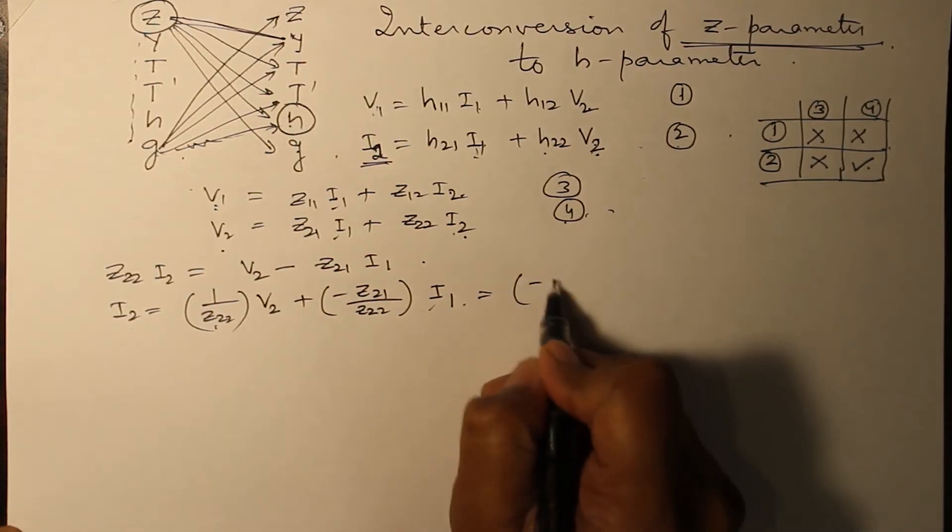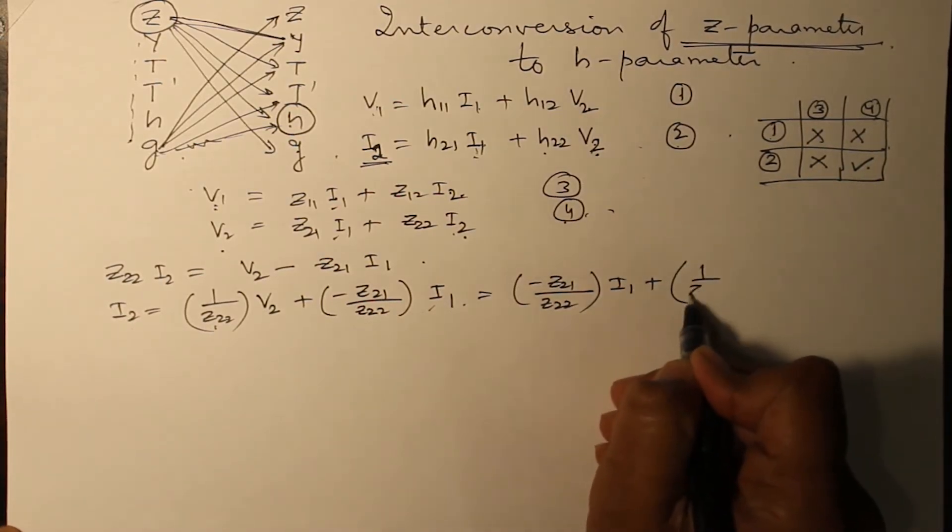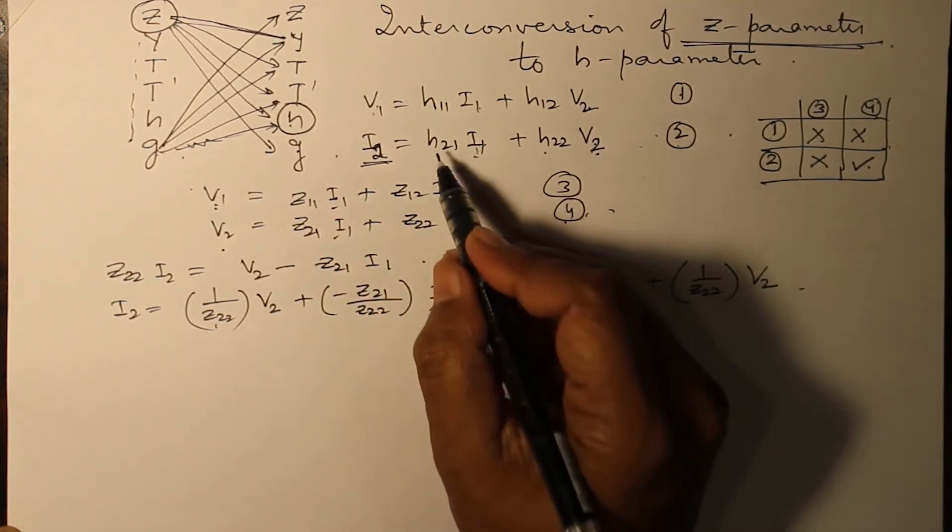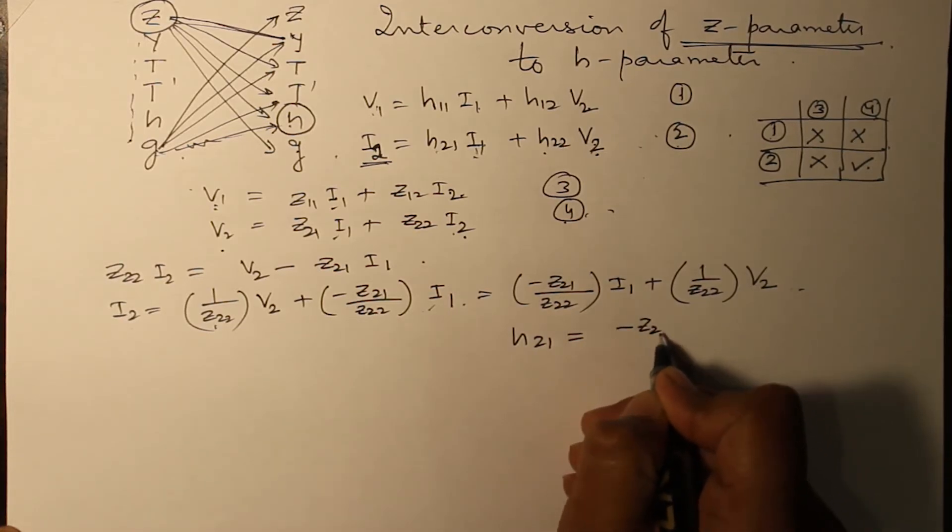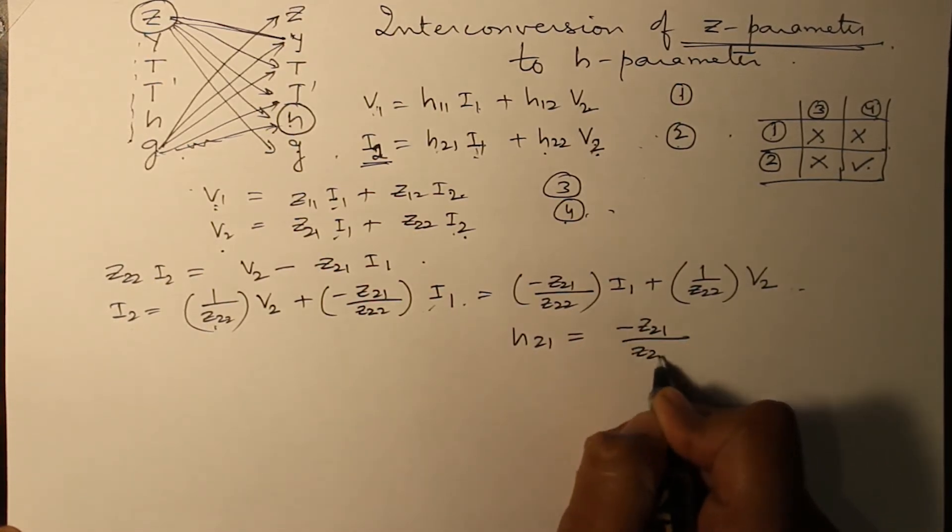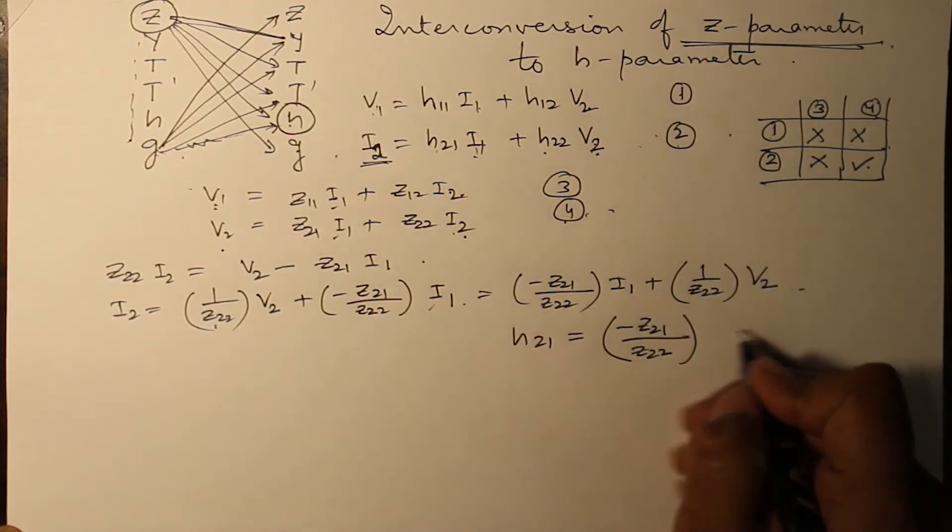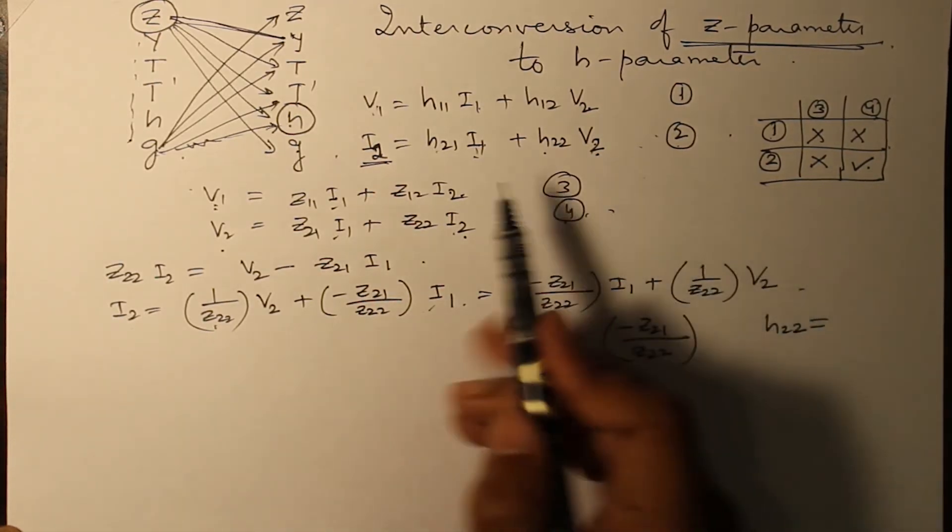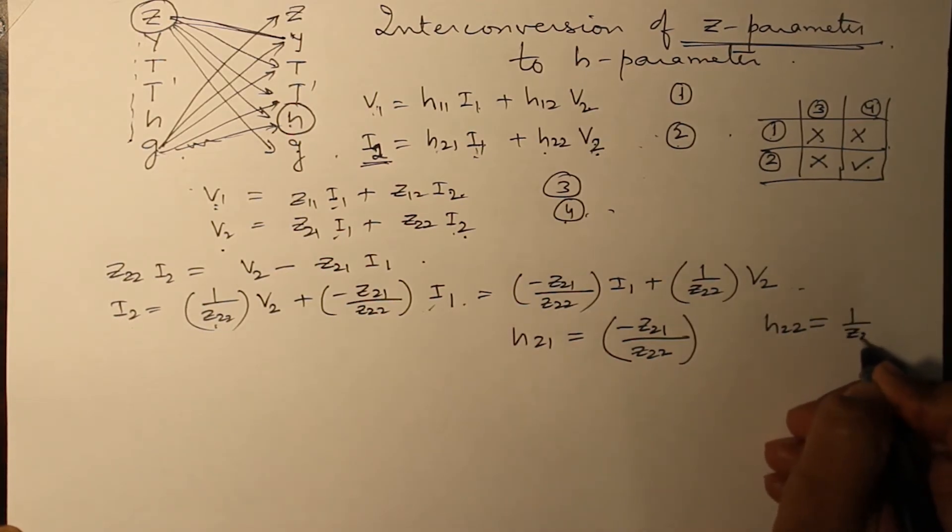You can rewrite it because there should not be any confusion, and with practice you should be in a position to write down the same sequence as required in equation two. So directly you can write down H21 as minus Z21 over Z22, and unit of H21 is dimensionless. And H22 having unit mho is one over Z22.